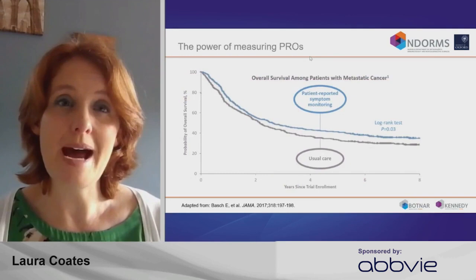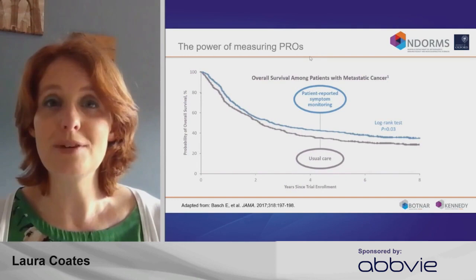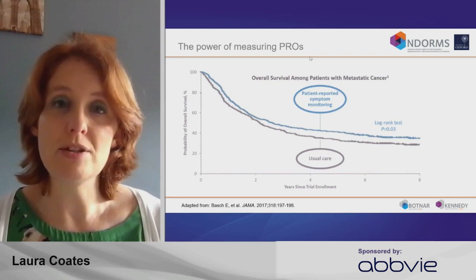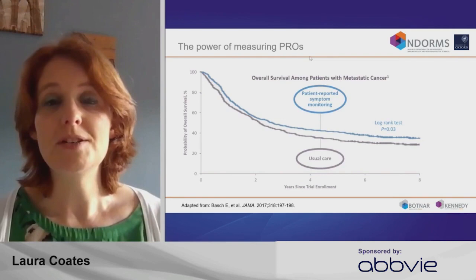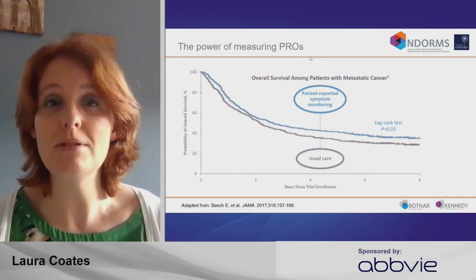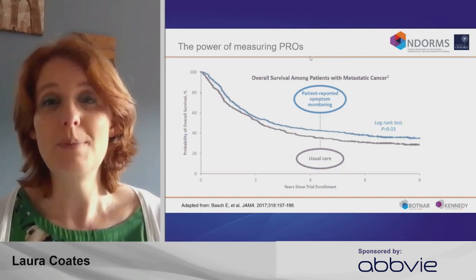I wanted to finish by mentioning the power of measuring patient-reported outcomes. This is a study from the US looking at survival for patients with a mixed diagnosis of metastatic cancer, where patients were given PRO monitoring — remote monitoring with an app where they reported their symptoms versus usual care. All of these patients have incurable metastatic cancer, but there was a benefit just from monitoring PROs: having patients report how they're doing through to clinicians and allowing timely clinical action.